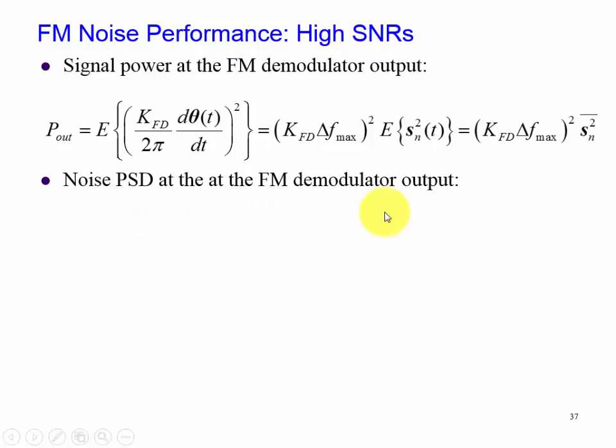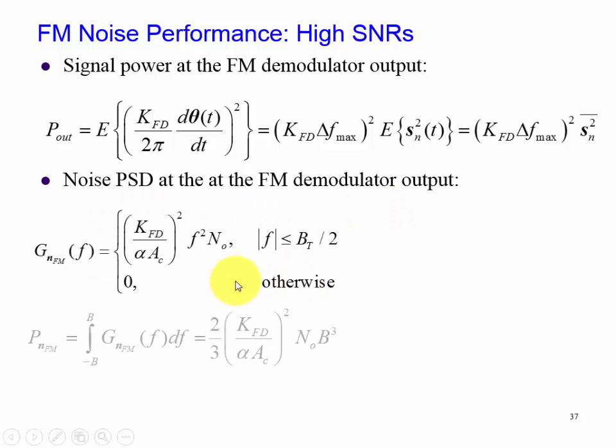So there's our signal power. Here's our noise. We're going to integrate it from minus B to B. And you can see all this here is a constant, so we can pull that out. Here's this K_FD right there, and zero is right here. And now we're integrating f squared.